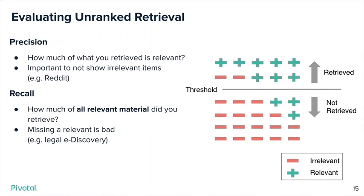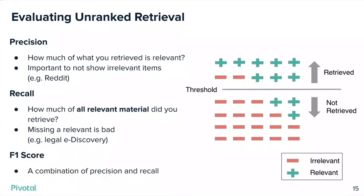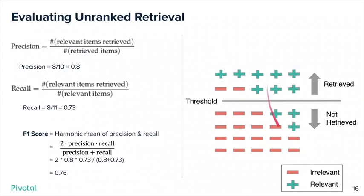There are ways to combine precision and recall into other metrics. Let's step through an example. On the right we have a line indicating things below it were not retrieved and things above it were retrieved. Precision is how many of what you retrieved was relevant — here we have eight green pluses out of 10 things retrieved, so that's 80% precision. Recall is out of everything that is relevant: there are eight on top and three on the bottom, so 11 total relevant things, and we retrieved eight. That's eight out of 11, or 0.73 recall.